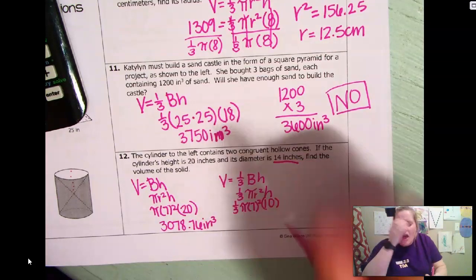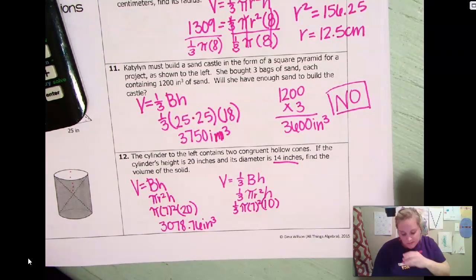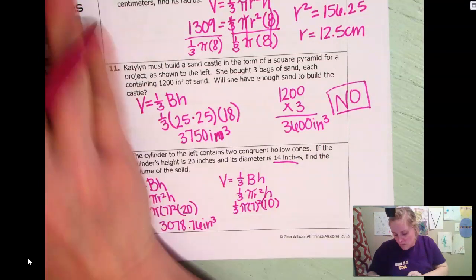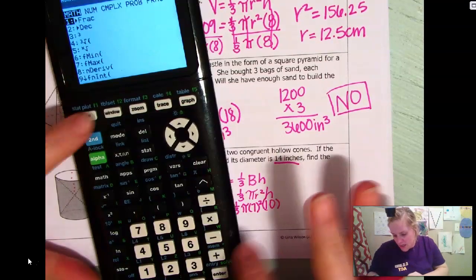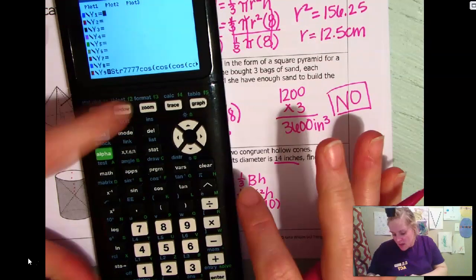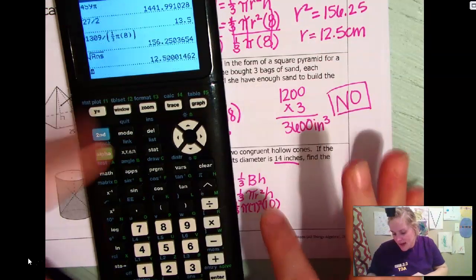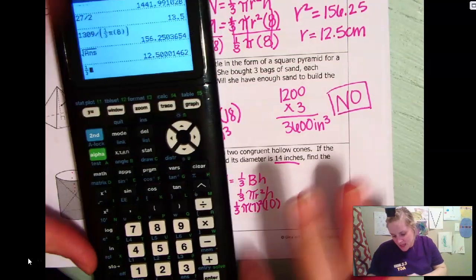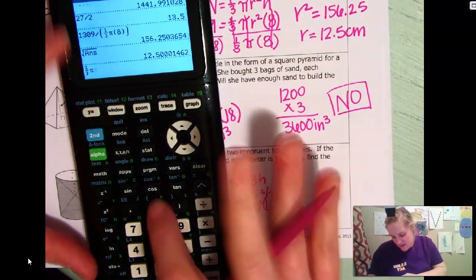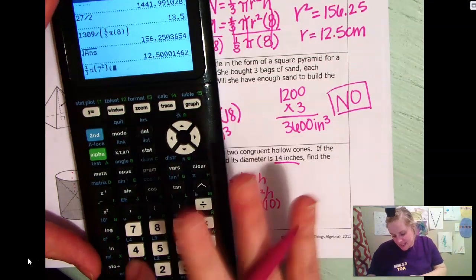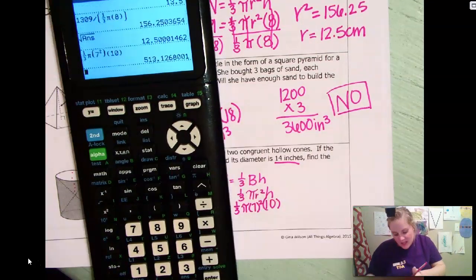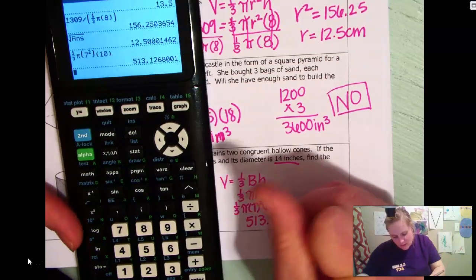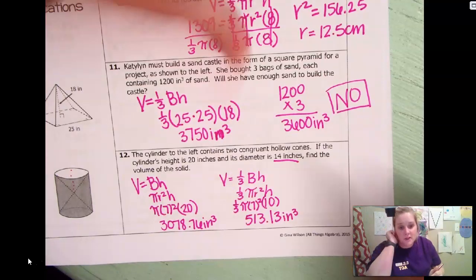Hold on. Excuse me, y'all. Okay. So then I'm going to type this in my calculator. So one third, whoops, sorry. Alpha y equals one third, and then pi times seven squared times 10. Type that in. That's going to 513. And we'll round that to three.